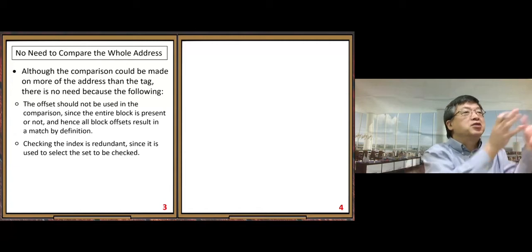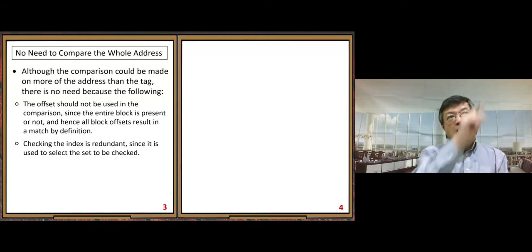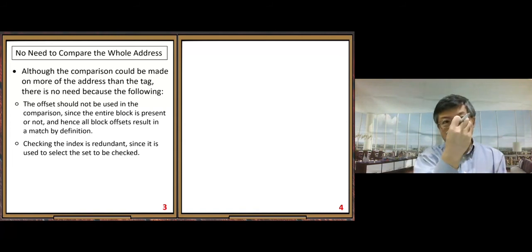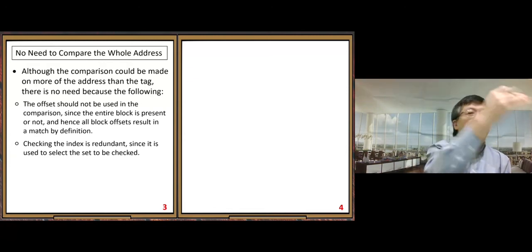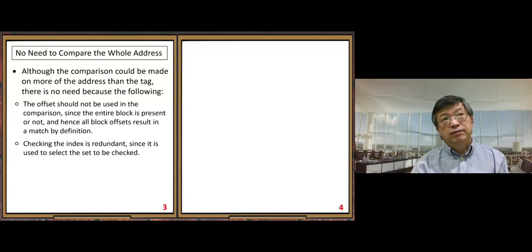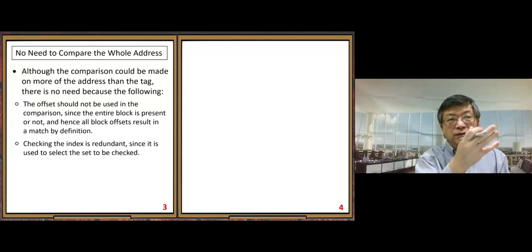The index field is used to find the right set — it tells you which set to go to. Once you've used the index to arrive at the correct set location, you no longer need the index bits. Within the set, you only compare the tag field for matching. Comparing the index again would be redundant and a waste of time.